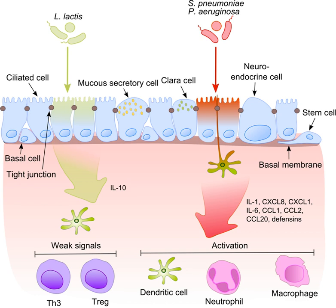The commensal bacteria are nonpathogenic and defend our airways against pathogens. There are several possible mechanisms. Commensals are the native competitors of pathogenic bacteria, because they tend to occupy the same ecological niche inside the human body. Secondly, they are able to produce antibacterial substances called bacteriocins, which inhibit the growth of pathogens. Genera Bacillus, Lactobacillus, Lactococcus, Staphylococcus, Streptococcus, and Streptomyces are the main producers of bacteriocins in the respiratory tract.